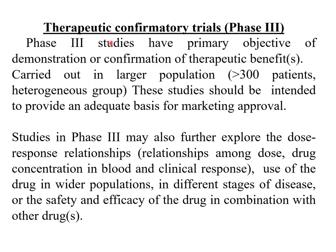Phase 3 trials, called therapeutic confirmatory trials, have the primary objective of demonstrating or confirming the therapeutic benefits observed in Phase 2. Such trials are carried out in a larger population of thousands of patients who are heterogeneous, including different groups. These studies provide a basis for marketing approval. Phase 3 further explores dose-response relationships, use of the drug in wider populations at different stages of disease, and safety and efficacy of the drug in combination with other drugs.